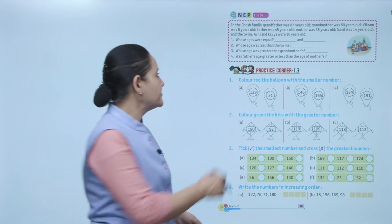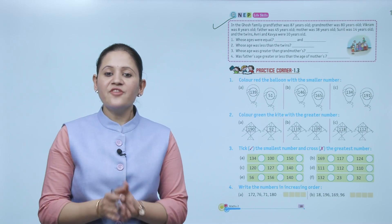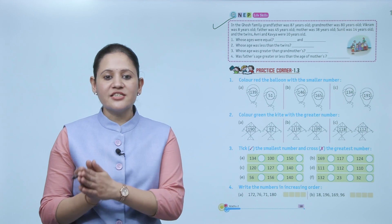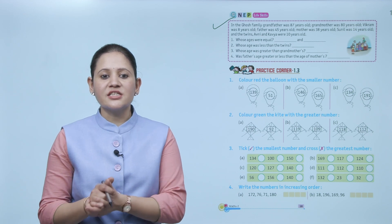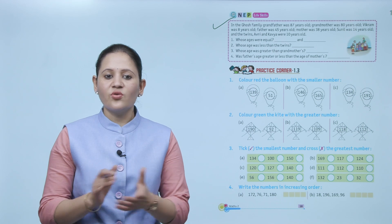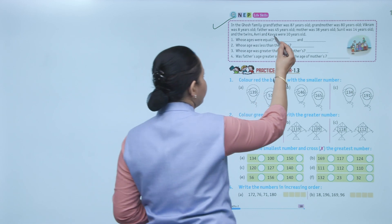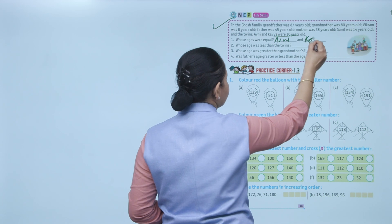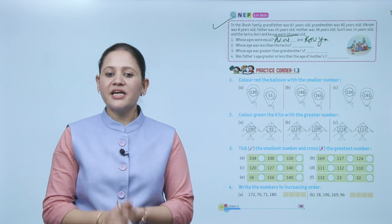Next: Life Skills. In the Ghost family: grandfather is 87 years old, grandmother is 80 years old, Vikram is 8 years old, father is 45 years old, mother is 38 years old, Sunita is 14 years old, and the twins Avni and Kavya are 10 years old. Whose ages are equal? Obviously the twins — Avni and Kavya both have an age of 10 years.